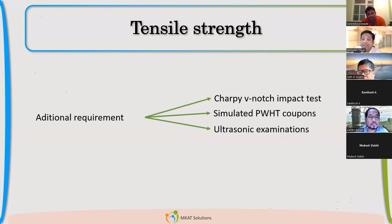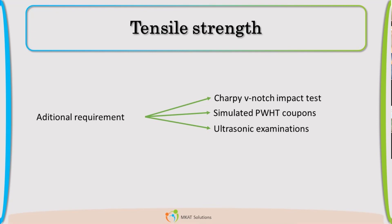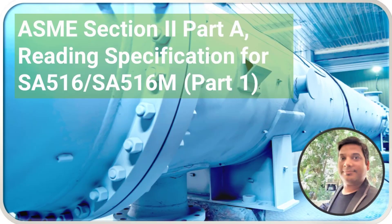If you need ultrasonic examination to check whether there are flaws in that plate, that is also possible. We will have to mention these as additional requirements. Please remember that if you mention these additional requirements, there will be a cost increase, because the mill manufacturer has to spend on doing this extra testing for you. To understand material specification completely, do check out our first part of this video — the link is given in the description.